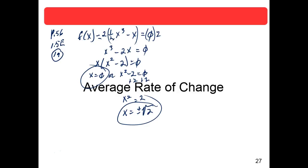Another thing you could have done, had you not wanted to do it that way, is use the quadratic formula — a little awkward for this simple a problem, but doable. Or, as I said, notice that 2 is the perfect square of √2, so you could have factored as (x - √2)(x + √2) = 0. So there are several ways to get there. It was a strange problem, but that answers your question. Is that the answer they had in the back? Let's check — yes: 0 and ±√2. Good for them.